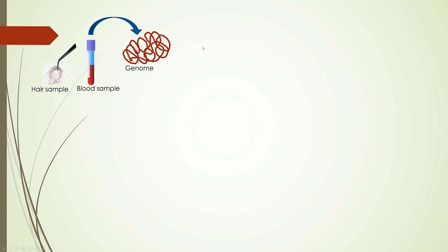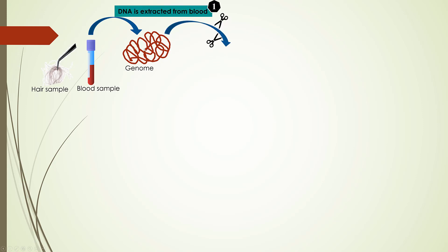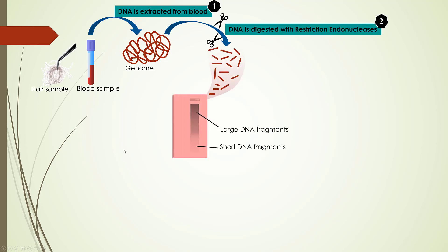Let's understand this technique in detail. First, we isolate the DNA from hair and blood samples and digest it with restriction endonucleases. Digested DNA fragments are then separated in agarose gel by a technique known as electrophoresis. Larger and smaller fragments are resolved in this way.